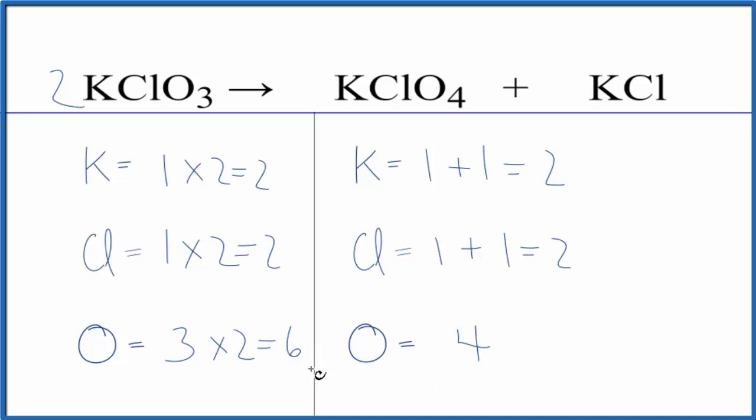So we could change our coefficient here to four and we have one times four. That'll give us four potassiums, one times four, four chlorines, three times four. That gives us twelve oxygens.